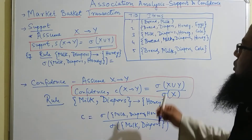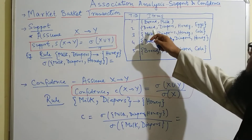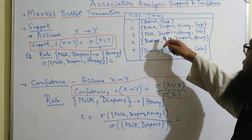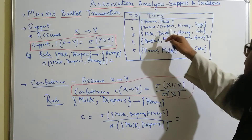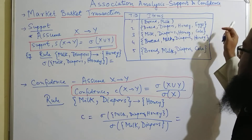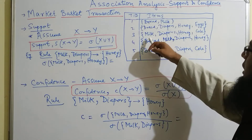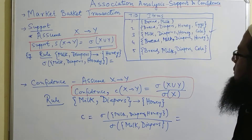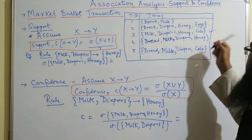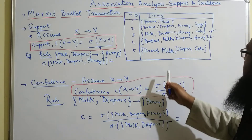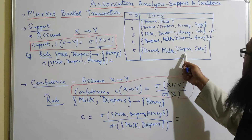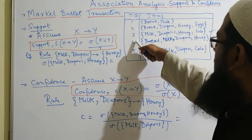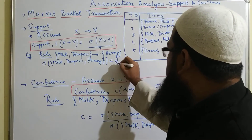Let us check out: we have milk, honey and diapers. Here you have diapers and honey but there is no milk, so we can't take this transaction. Here we have milk, diaper and honey, so we will take this transaction. Milk, diaper and honey — we take this transaction as well. And milk, diaper but there is no honey. So the total support count will be 1, 1 — that is 2.